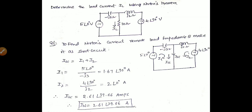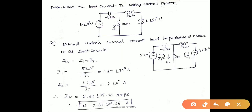The first problem: determine the load current IL using Norton's theorem. From the given figure, we have two voltage sources. One is 5 at an angle 0 degrees, the other one is 4 at an angle 90 degrees. He asked for the load current IL, which is the 10 ohm branch. To find the Norton's current, we have to remove this load resistance and make it a short circuit.